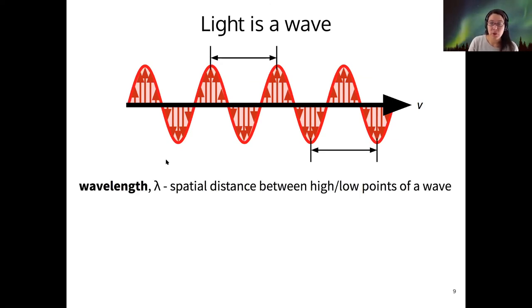And the first quantity of interest is the wavelength, which is denoted by Greek letter lambda. This is the distance between the high points or the low points of a wave, so measuring from peak to peak or trough to trough.